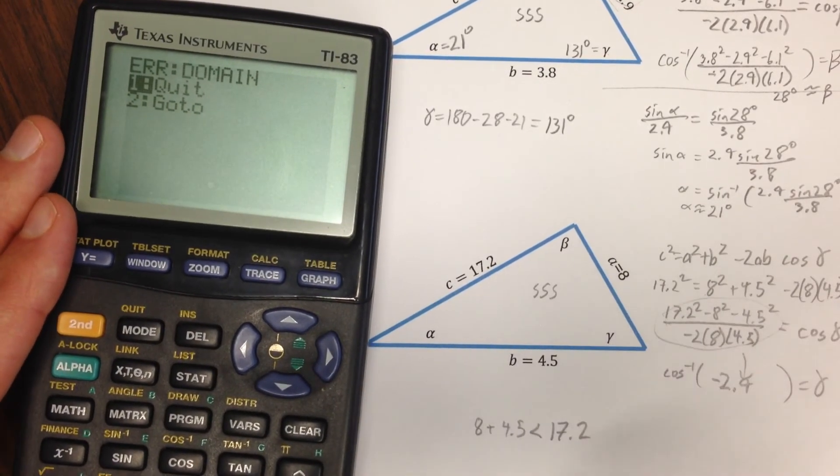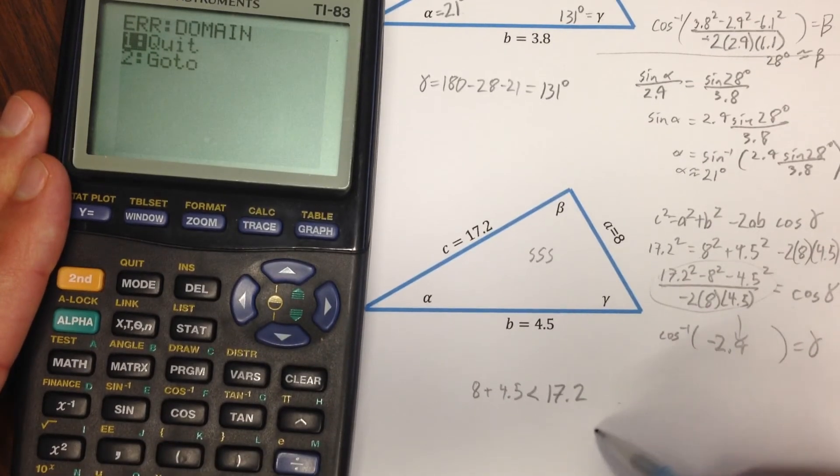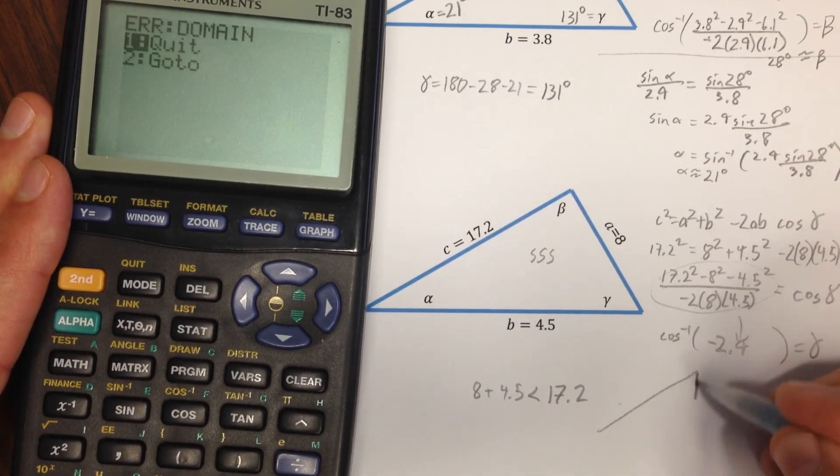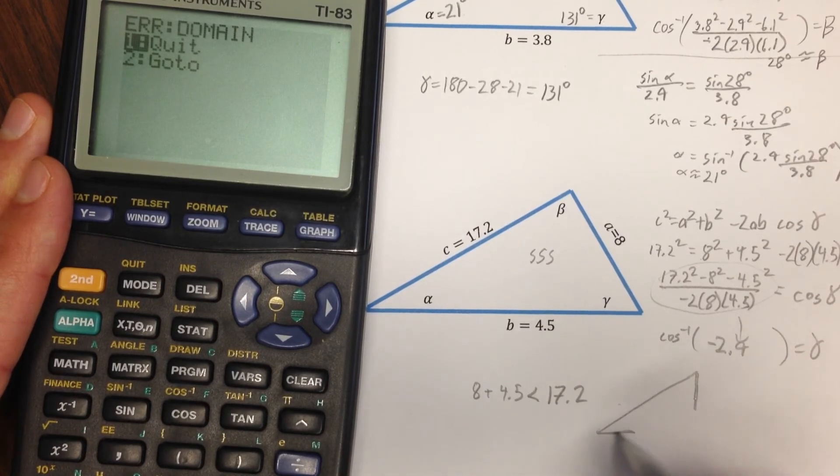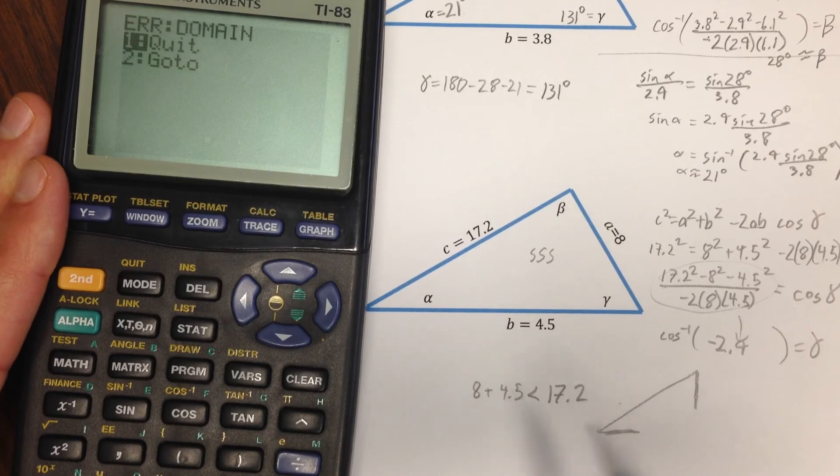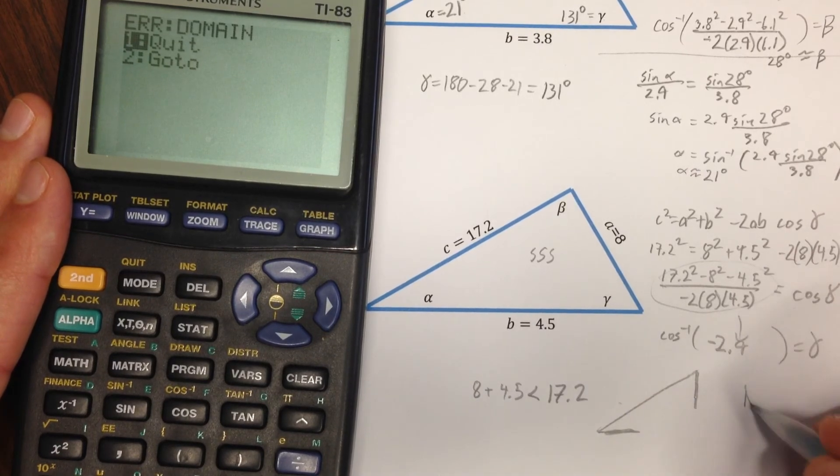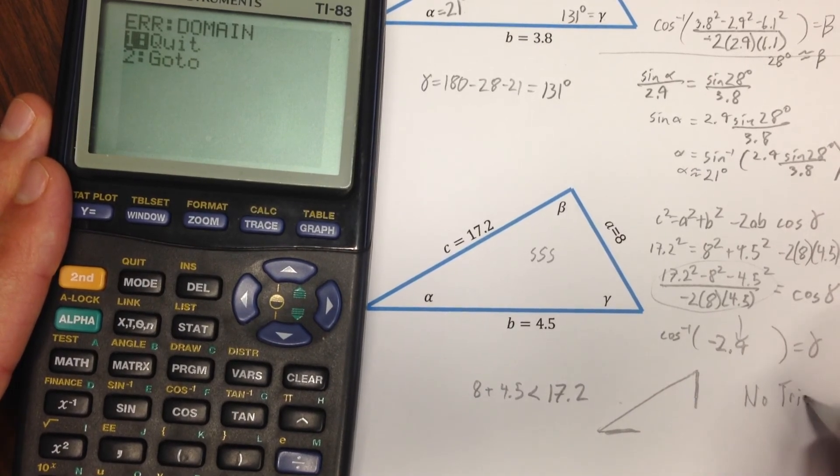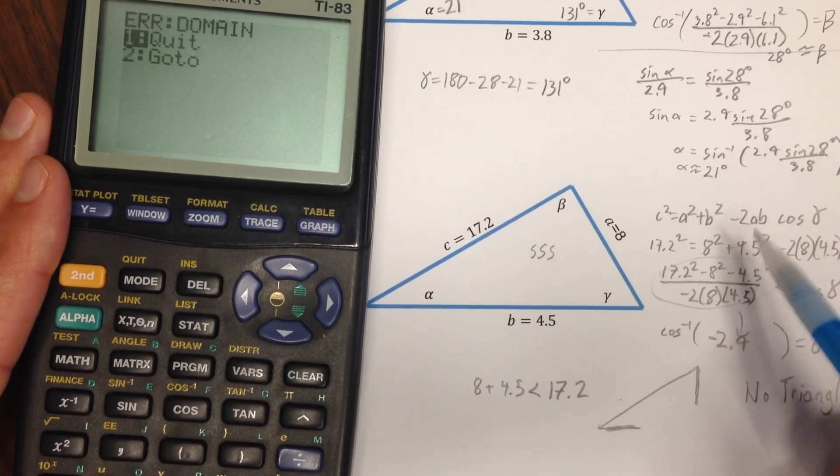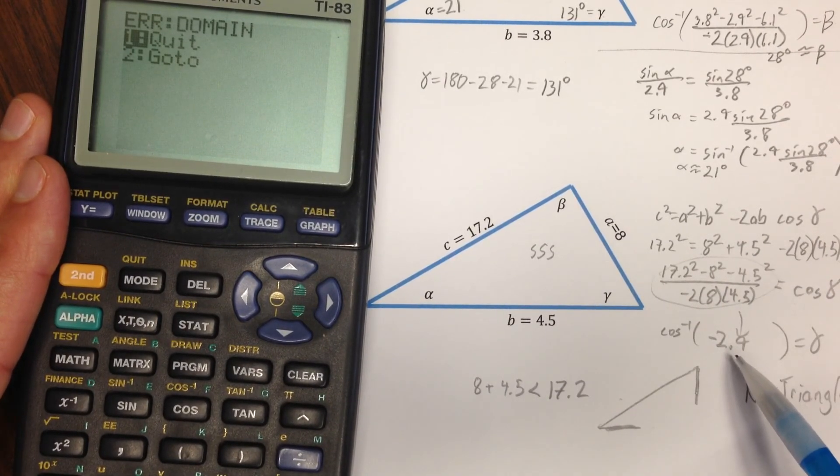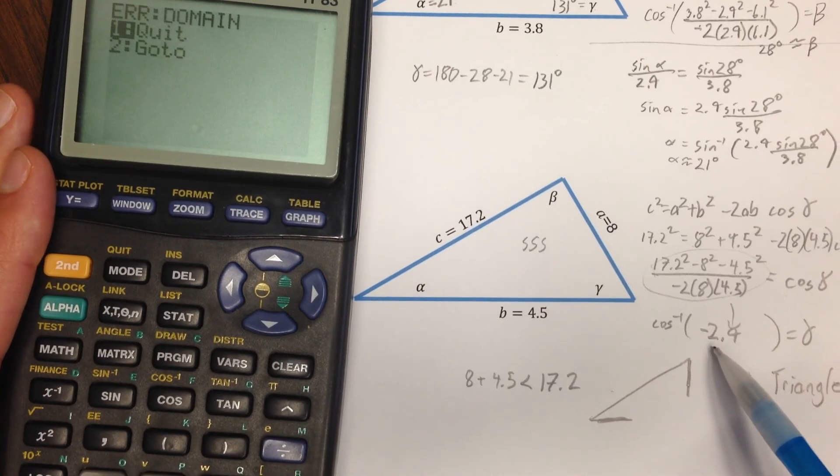So, in reality what you have here is if you were drawing this, you would have C here. And you've got these little short sides, A and B. And there's just no way that they can meet. And so, what you get is you get no triangle. And you can see that just by comparing the side lengths. But if you should come down using law of cosines and get something that gives no solution, that's what's happened.